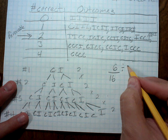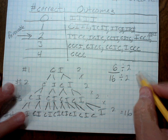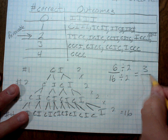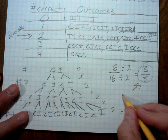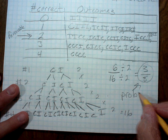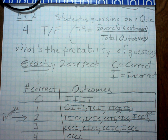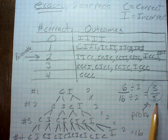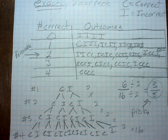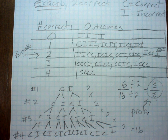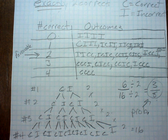Dividing by 2 top and bottom, I get 3/8. So the probability of guessing exactly two correct is 3/8. In other words, if I take this quiz eight times and completely guess, there's a pretty good chance that three of those eight times I'll only get two correct. As you can see, guessing is not the best way to approach quizzes.